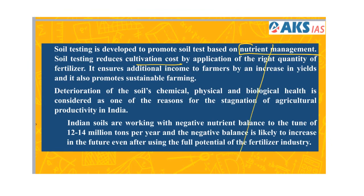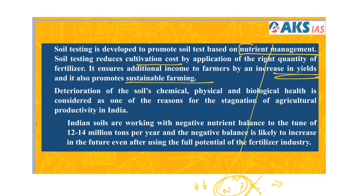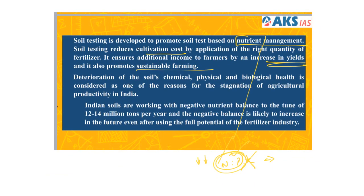This will help reduce cultivation costs — if you buy all NPK together it may cost a lot, but if one micronutrient is not needed, the farmer spends less. Soil health cards will also help increase farmer yields and promote sustainable farming. It was observed that India's stagnation in agricultural productivity was mainly because people did not recognize the soil's deterioration in chemical, physical, and biological health. The scheme was introduced to address this negative nutrient balance.